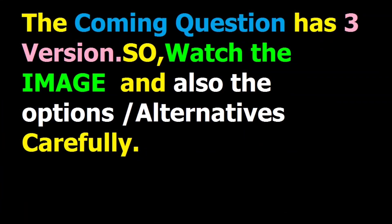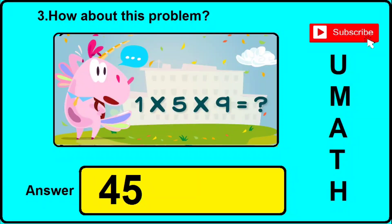Question number 3 has got three different versions or types, so you need to watch the image and click the answer I will be showing here. For example, in version 1, it is given: 1 multiply 5 multiply 9 equals what. The correct answer will be 45, so you need to click 45 if you find this sort of image in question number 3.